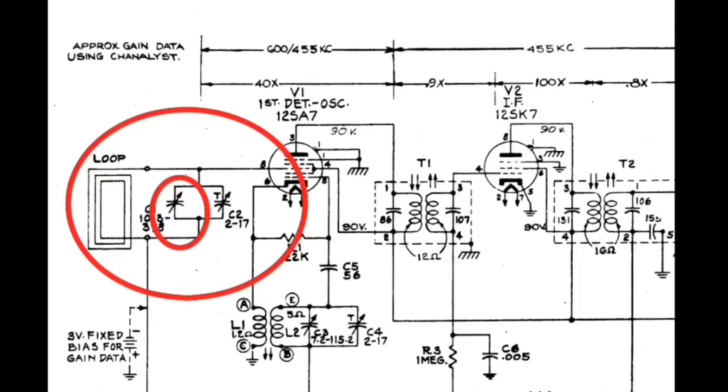And then we'll take a look real quick making some Q, or quality factor measurements, and see if we can estimate. It'll be an estimation of the quality factor of the particular inductor, that being the loop antenna.